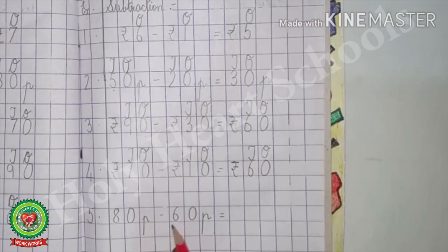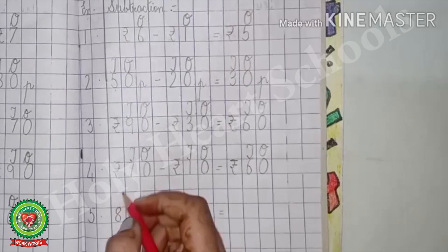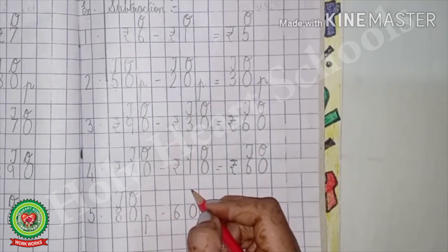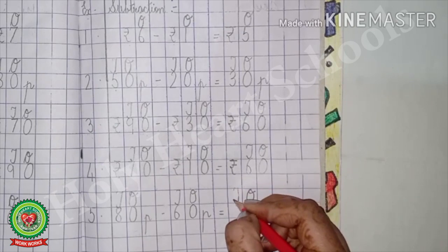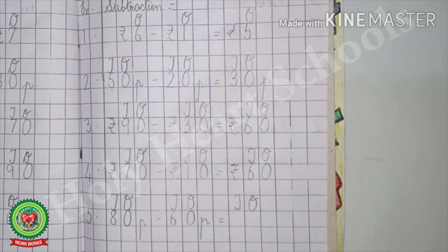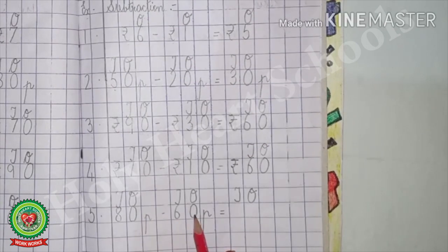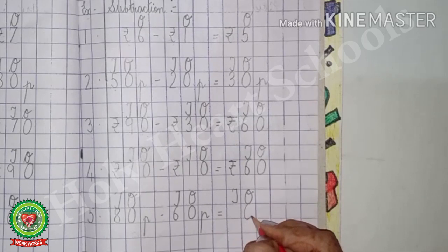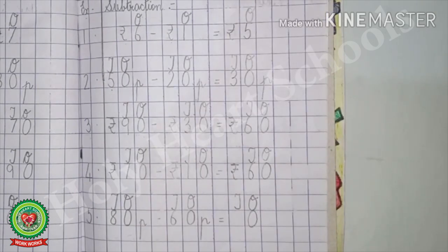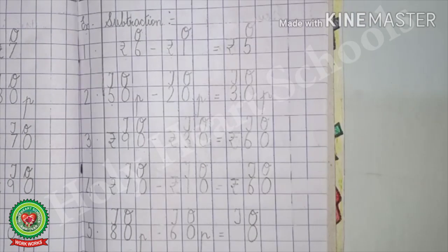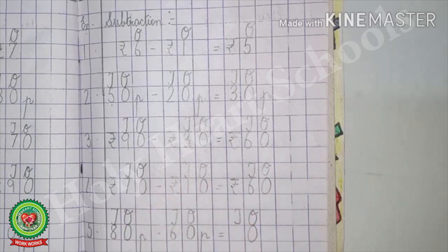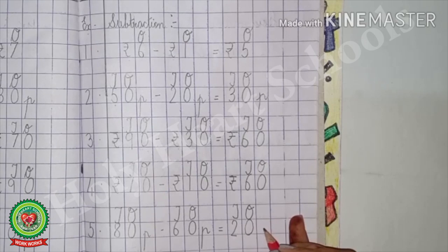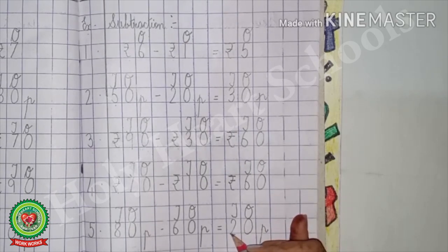Number 5: 80 paisa minus 60 paisa. Write the place value chart — 1s and 10s on both numbers, and 1s and 10s in the answer. Start subtraction from the 1s side: 0 minus 0, the answer is 0 — write 0 under 1s. Next, 8 minus 6: counting after 6 up to 8, that is 2 steps, the answer is 2 — write 2 under 10s. Write the unit, which is paisa.